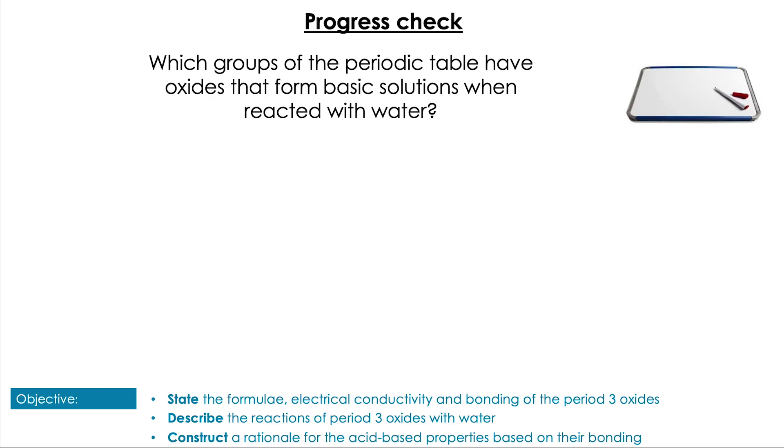Following that, which groups of the periodic table have oxides that form basic solutions when they react with water? Pause the video. Well, the first clue you get with this one is Group 1 are called the alkali metals, and it is going to be Group 1 and Group 2 metals that form their metal hydroxides when they react with water. We did say Group 1 reacts a little bit faster than Group 2, but they all react to form their metal hydroxide plus hydrogen.